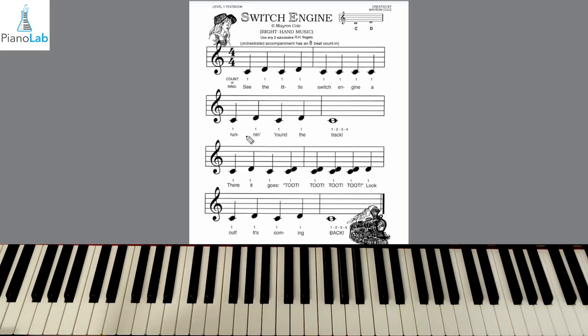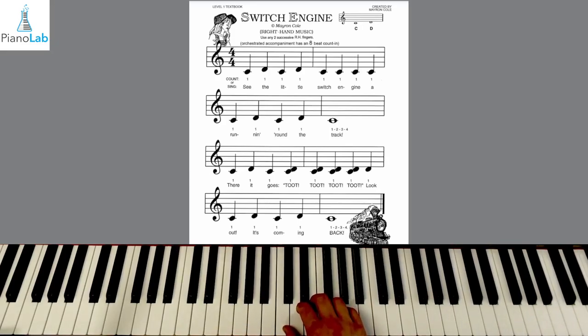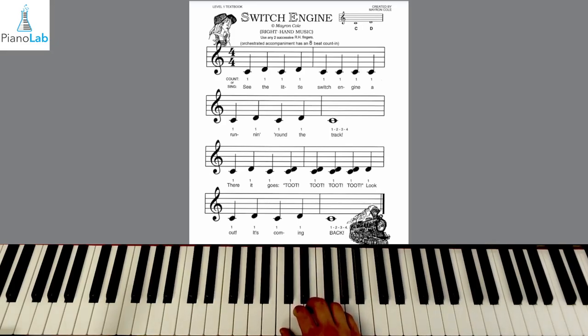Moving on to line number 2. It's actually the same thing as our first line, except for our whole note, which we're going to hold for 4 beats. So let's try that nice and slow. So 1, 2, here we go. Play C, D, C, D, and C. 2, 3, 4, and off.